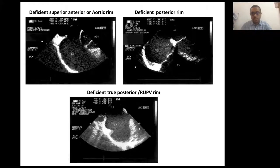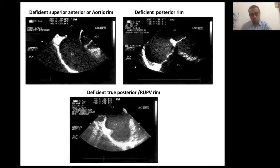This is a case with deficient posterior margin. In the long axis view at 125 degrees we see the right upper pulmonary vein, and there is true deficiency of the posterior margin.